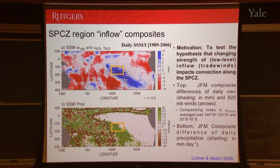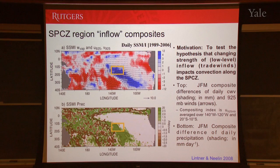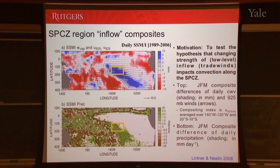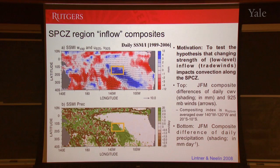Going back a few years to some work — this is how I initially became interested in this problem — we wanted to look at the relationship between convection along the eastern margin of the SPCZ and its relationship to the low-level circulation. At this time we were thinking largely in terms of the Eastern control mechanism. Our motivation was to test the hypothesis that variations in the strength of the low-level inflow — if the trade winds into the SPCZ are strengthened — would have an interaction in terms of the large-scale convective response along the SPCZ. We set up a composite analysis focusing on the outer tropics between 10°S and 20°S, and basically looked at an index of zonal wind speed.